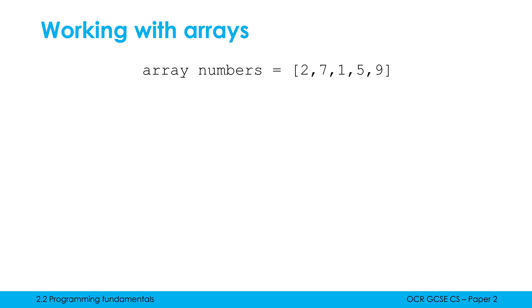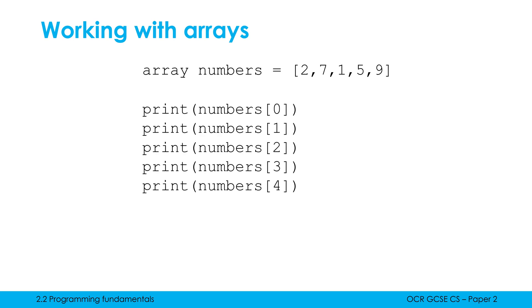As a really simple starting example, let's just print out these values. I can print out these values using indexing and go through one by one and use the index numbers to print out these values. So I would see 2, 7, 1, 5, 9 printed out on screen, but that's not a very clever way of doing it.